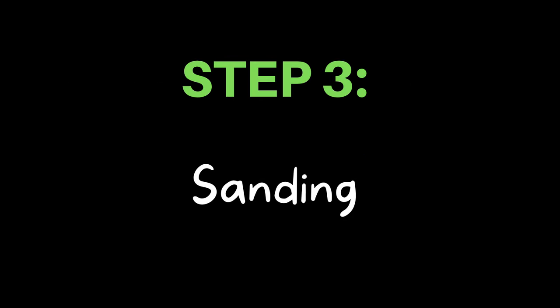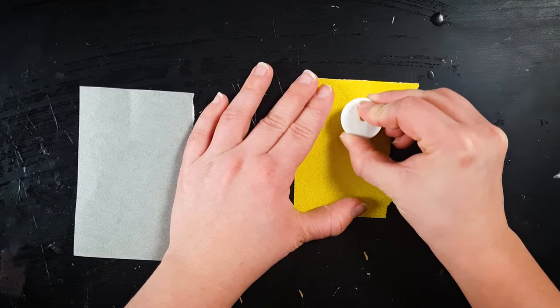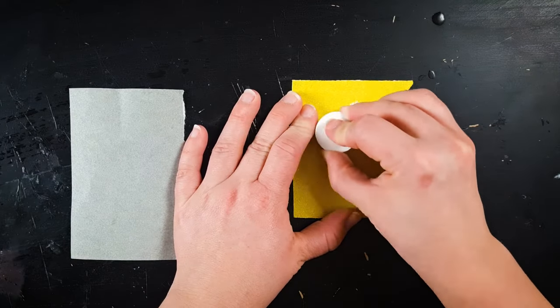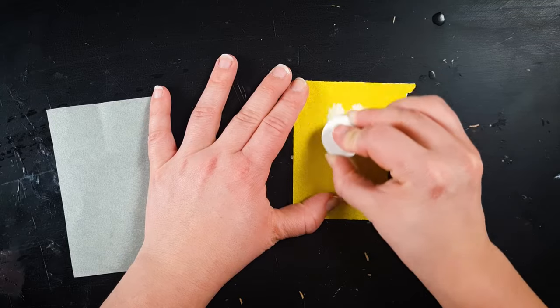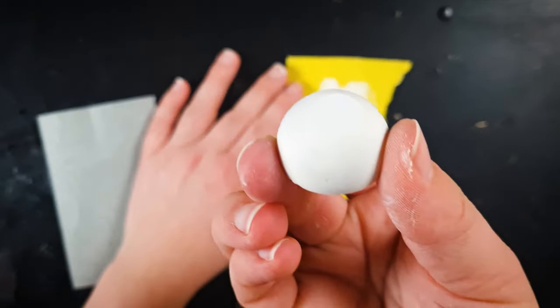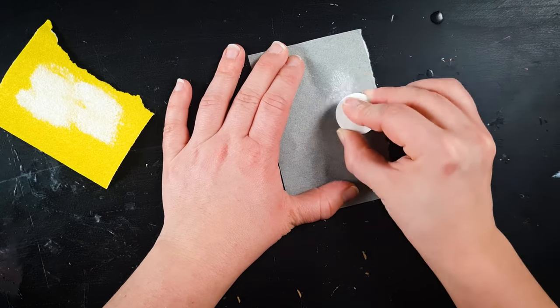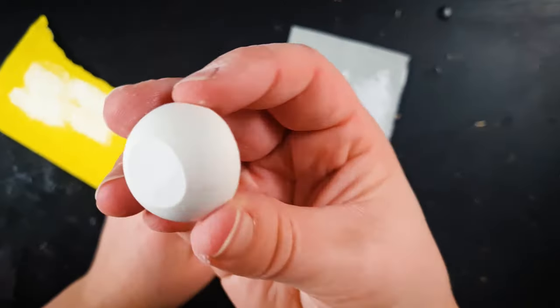Step three, after baking it's time to sand down the tip of our eyes to make room for the iris. I start with a rough sandpaper to make some quick progress and check as I go to make sure I get the diameter that I want. Then I move on to a finer sandpaper to smooth out the surface and before you know it we're already on to step four.